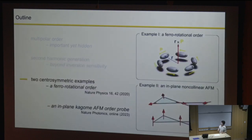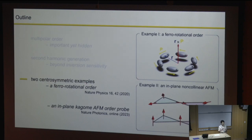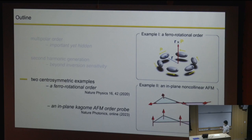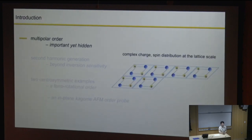With those preparations, I hope to show two particular examples that both have spatial inversion—I call them centrosymmetric examples. One is the so-called ferrorotational order, which is a head-to-tail loop arrangement of electric dipole moments within the unit cell repeating across long distances. The second example is a so-called all-in-all-out antiferromagnetism for a Kagome metal. If you have any questions during the presentation, please feel free to stop me.